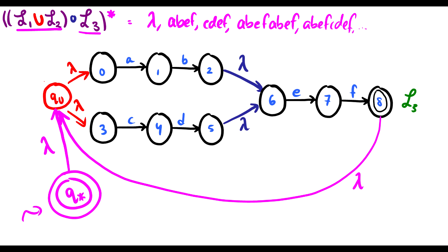That was converting regular operators into finite state machines — taking old finite state machines, merging them together with the regular operators, and then producing a new finite state machine. This is a sort of informal proof that if you have two regular languages, you can perform an operation and get a new regular language. There is a formal mathematical proof, but it's very wordy and basically just describes this exact process in words. If you go find a formal proof online, you'll probably be able to understand it now because you've seen a visual diagram of what's going on. If you have any questions, leave them in the comments below and I will do my best to answer them.